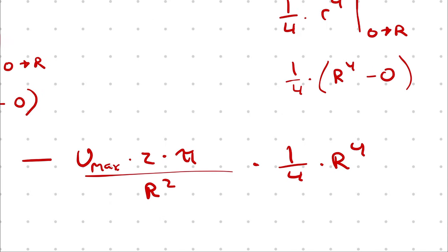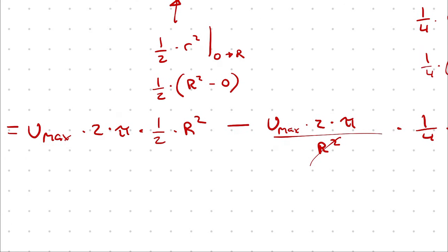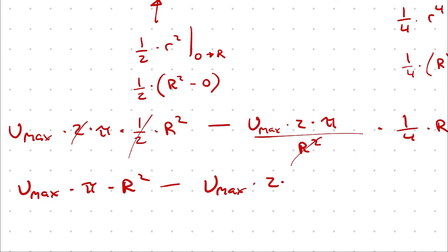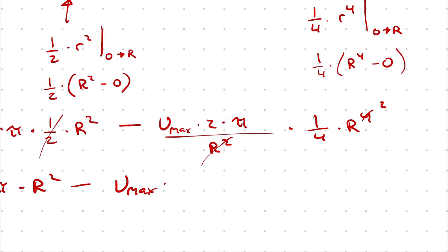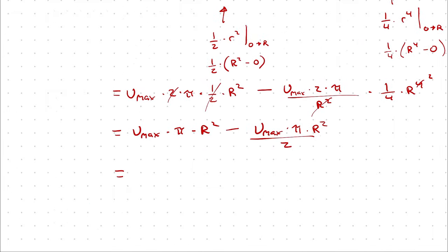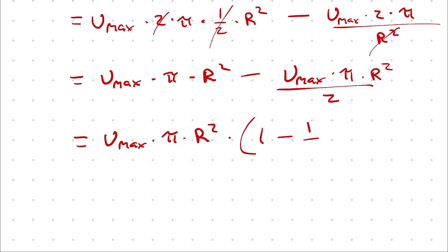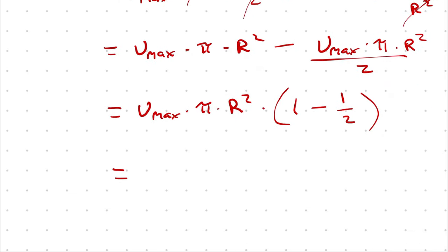Simplifying: R² in the denominator reduces R⁴ to R², and 2 divided by 4 is one half. This gives u_max · π · R² minus u_max · π/2 · R². Factoring out u_max · π · R² gives u_max · π · R² times (1 - ½), which equals u_max · π · R² times ½.